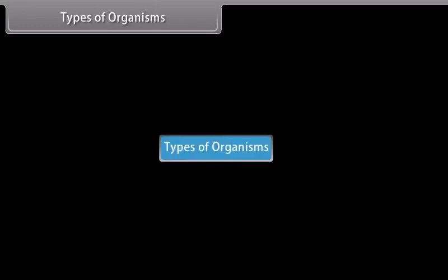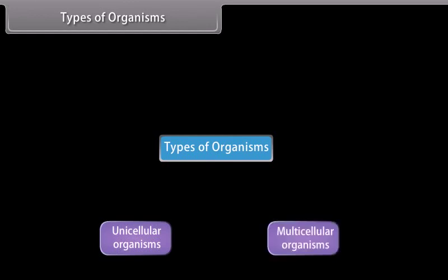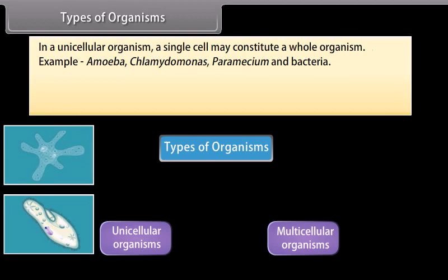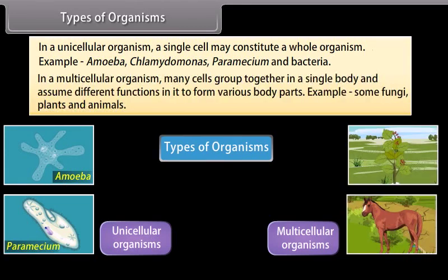Types of organisms: unicellular and multicellular. In unicellular organisms, a single cell may constitute a whole organism — examples include amoeba, chlamydomonas, paramecium, and bacteria. In multicellular organisms, many cells group together in a single body and assume different functions to form various body parts — examples include some fungi, plants, and animals.